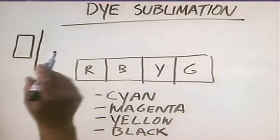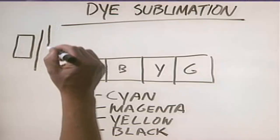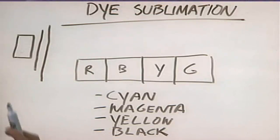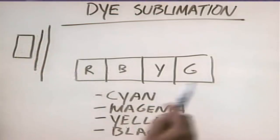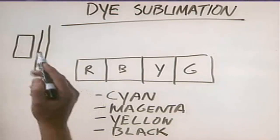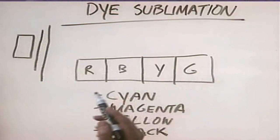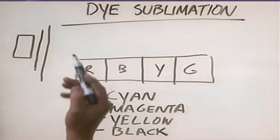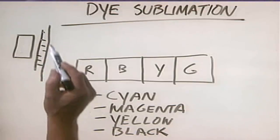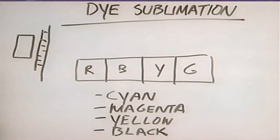How does a dye sublimation printer work? We have a print head, our transparent film, and our piece of paper. The print head heats up and passes over the transparent film. As that happens, the dyes within the film vaporize and are transferred to the paper — they actually permeate the glossy surface of the paper, and as they cool, they return back to their solid form. In this way, we can transfer a very high-quality image to that piece of paper.